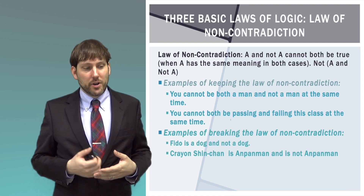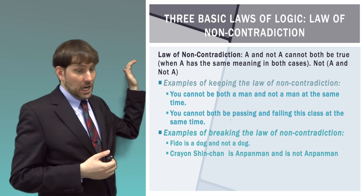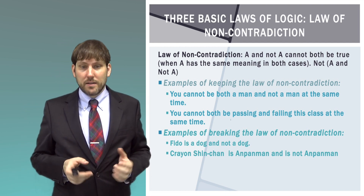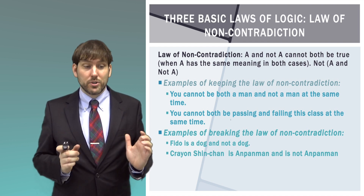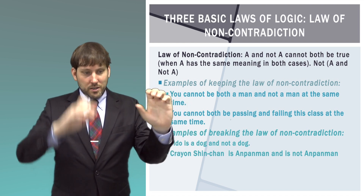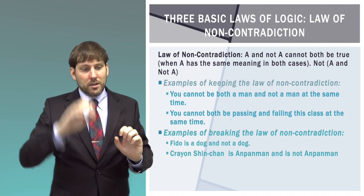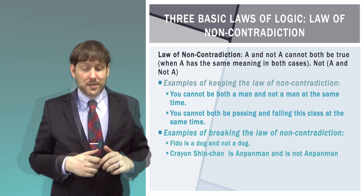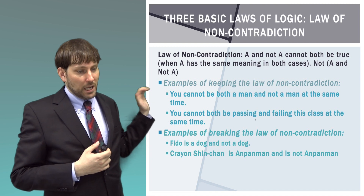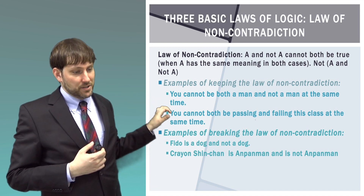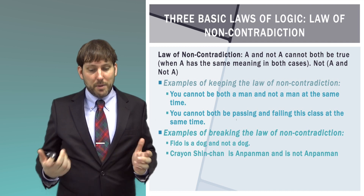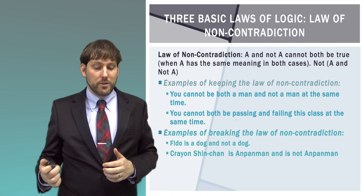The second law is the law of non-contradiction: A and not-A cannot both be true when A has the same meaning in both cases. Algebraically, we write this as: not (A and not-A). You need to make sure your parentheses are there — if you just say 'not A and not A,' you've said the same thing twice. What you're saying is that the same claim and its opposite cannot both be true at the same time. For example, you cannot both be a man and not a man at the same time, or both be passing and failing this class. If you said Fido is a dog and Fido is not a dog, you are breaking this.